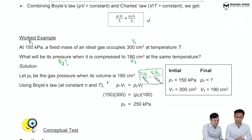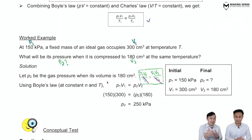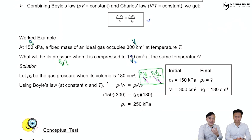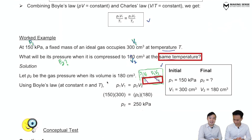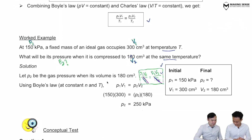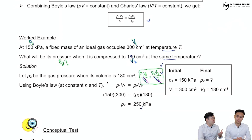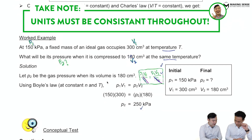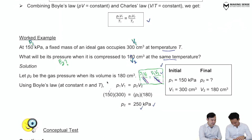We start with P₁ = 150 kPa, V₁ = 300 cm³, and we compress to V₂ = 180 cm³. We write out the combined gas law first. Because this was done at the same temperature, the T's cancel, leaving P₁V₁ = P₂V₂. Sub in the numbers to get P₂. An important note: units don't have to be in SI here — they just must be consistent. If you start with atm, your answer is in atm; if cm³, your answer is in cm³.